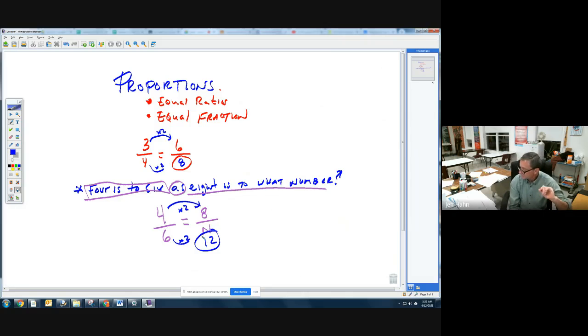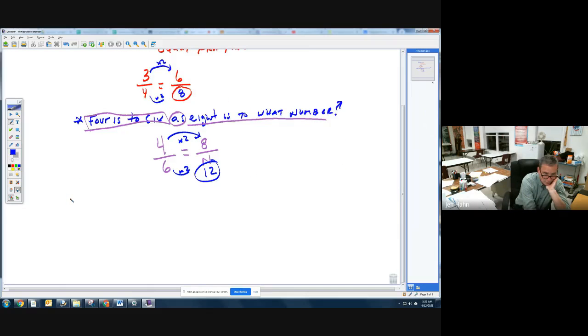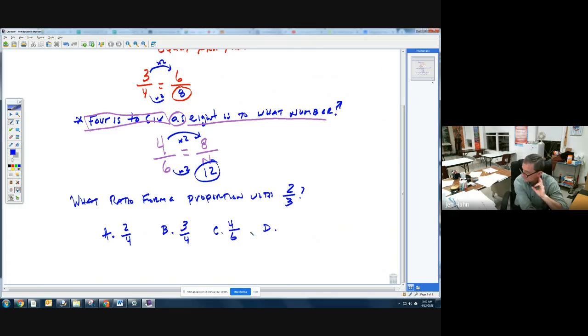Sometimes they will ask you what ratio forms a proportion with the number. So here's an example right from the book. What ratio forms a proportion with two-thirds? In other words, any fraction that's equal to two-thirds is proportional to it. Here are my choices. Letter A is two-fourths. Choice B is three-fourths. Choice C is four-sixths. And choice D is three-halves. Now remember, the deal is, you have to, whatever you multiply the top by, you have to multiply the bottom by.